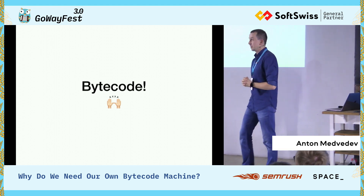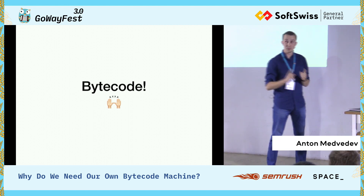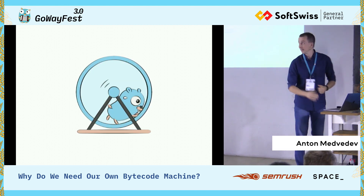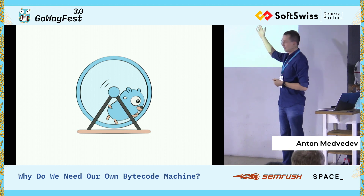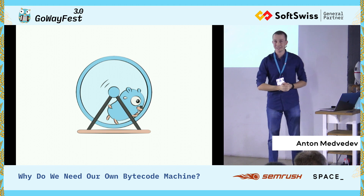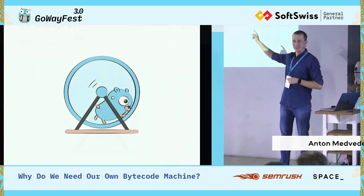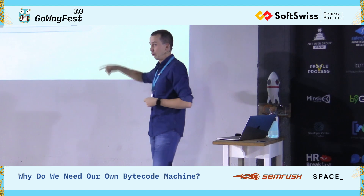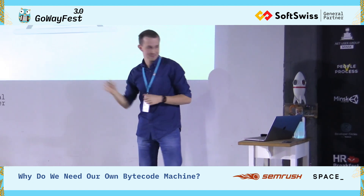When you start writing a new bytecode machine, you need to start with a new logo. This is what a virtual machine is — it's a loop where a gopher is running really, really hard.